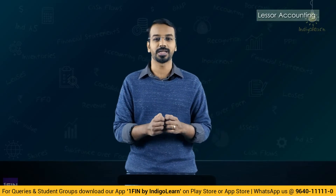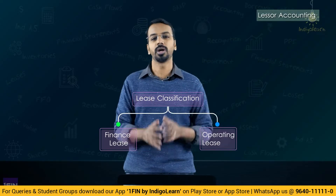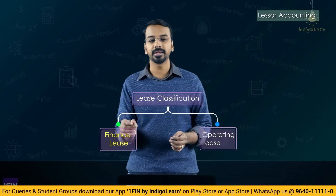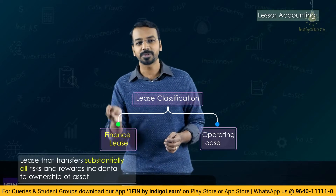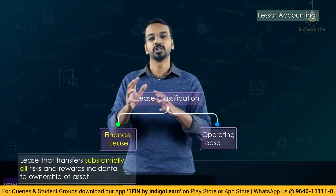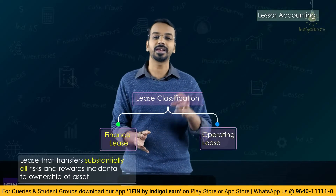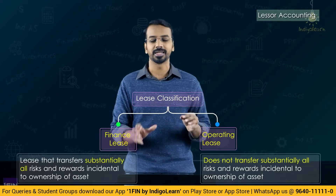As far as lessor accounting is concerned, the lessor has to classify leases as finance leases or operating leases. A finance lease is one where the lease transfers substantially all the risks and rewards incidental to ownership. When that transfer happens, it is a finance lease. If those risks and rewards are not transferred, then it is an operating lease.